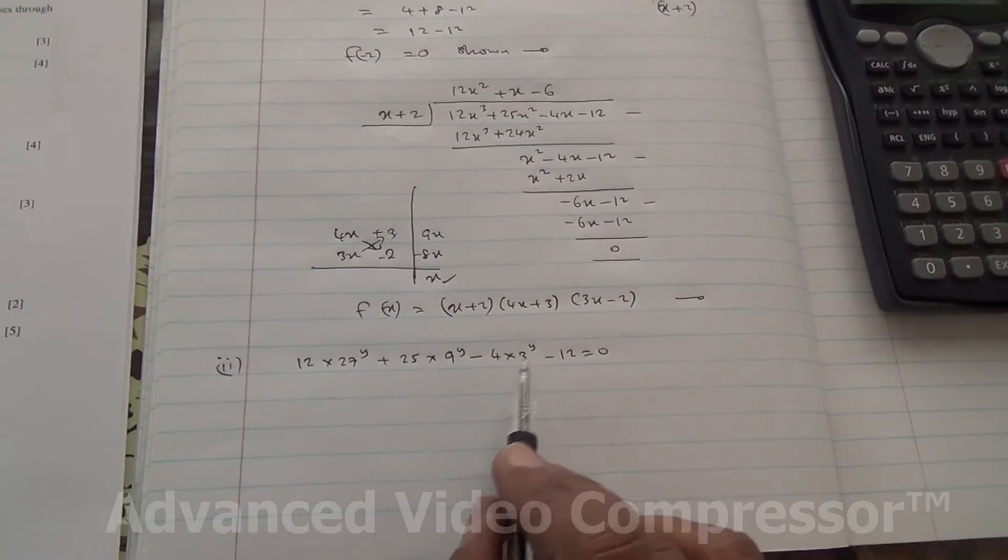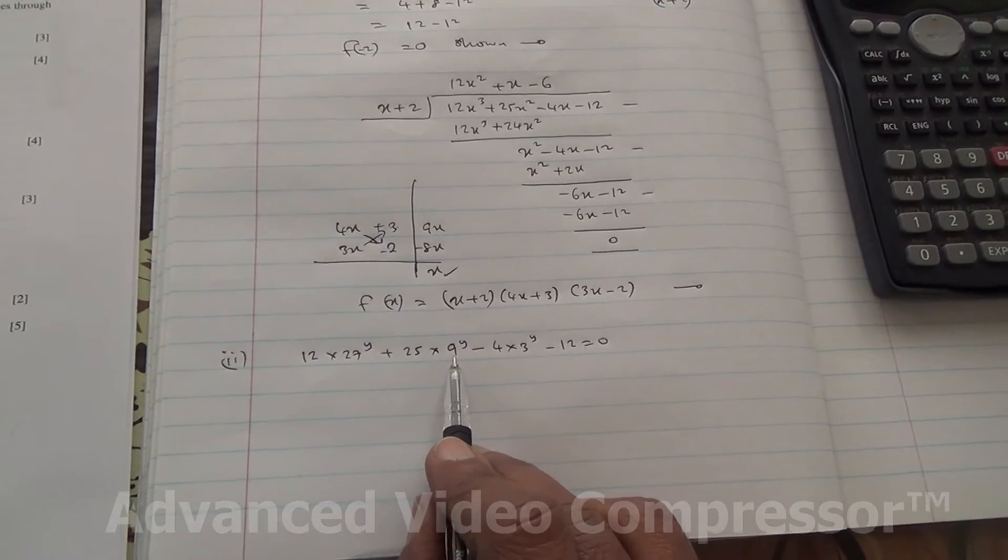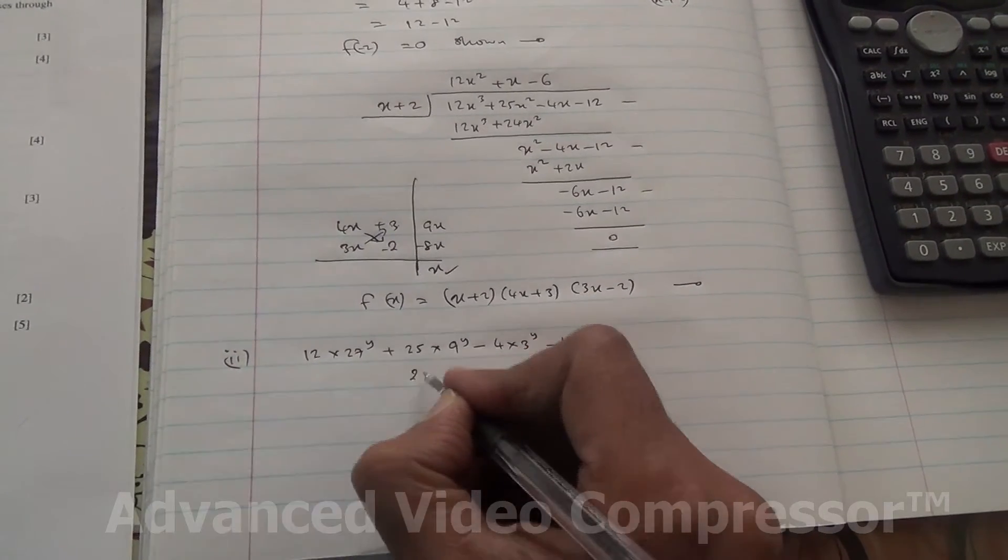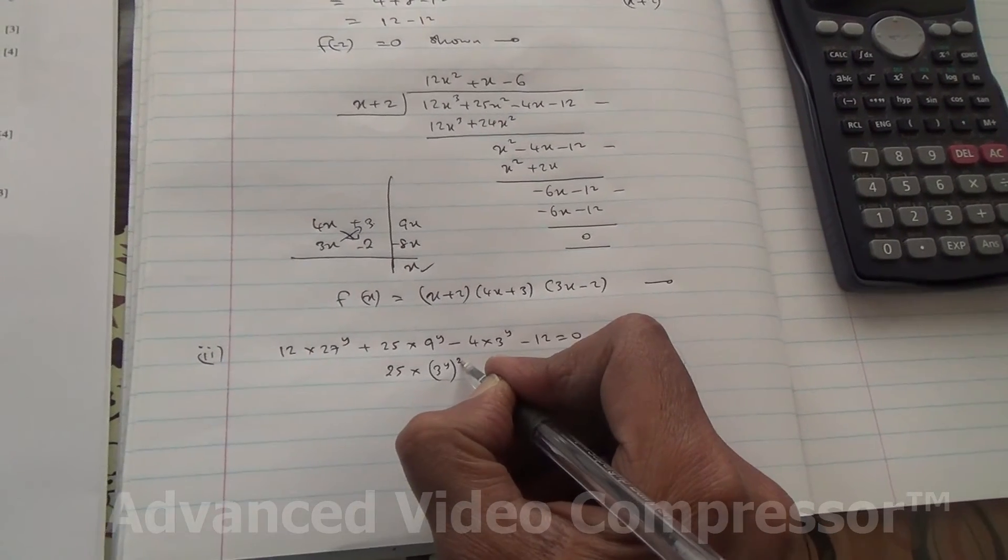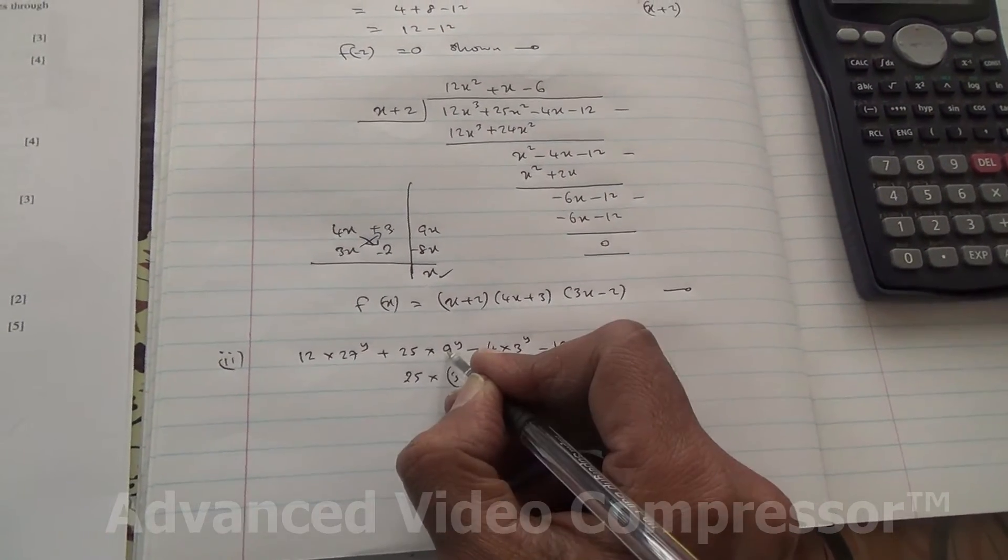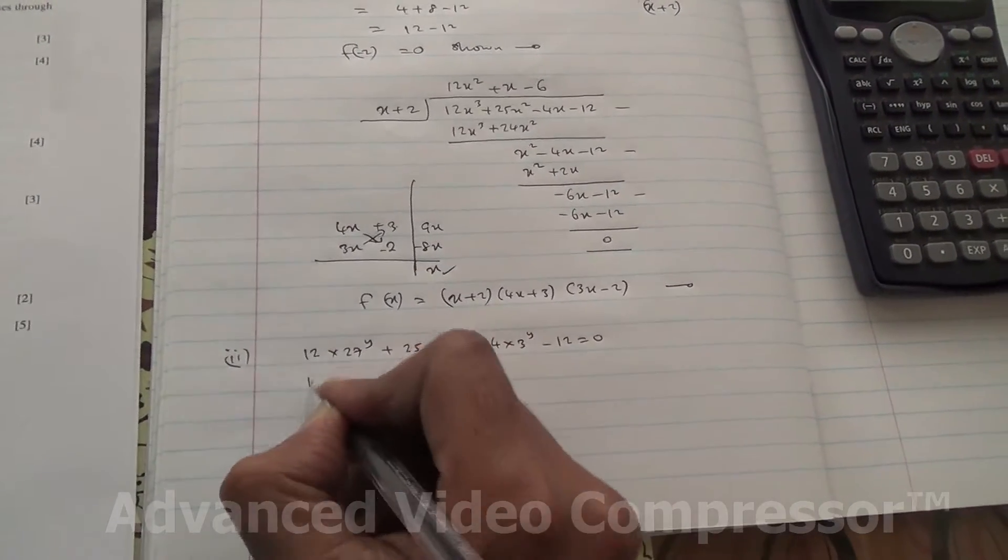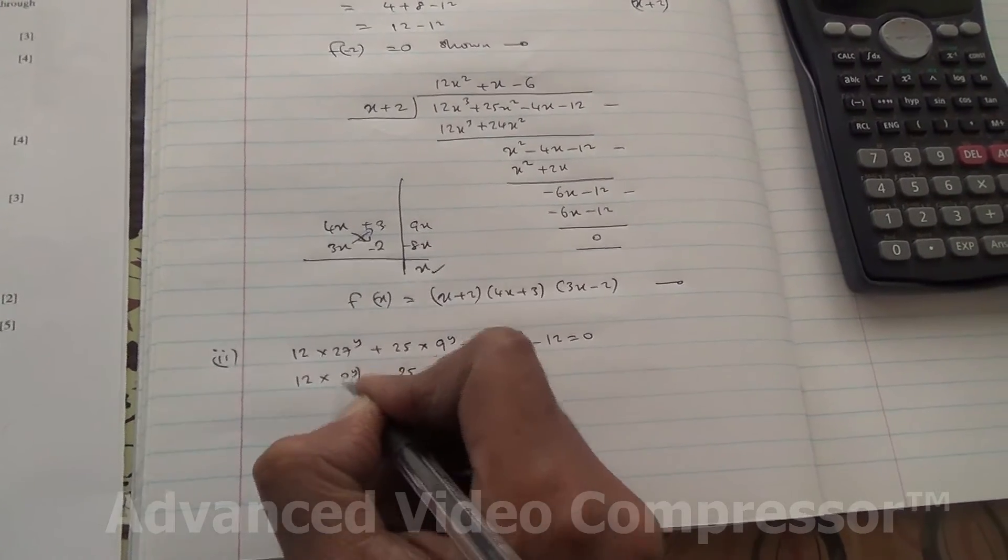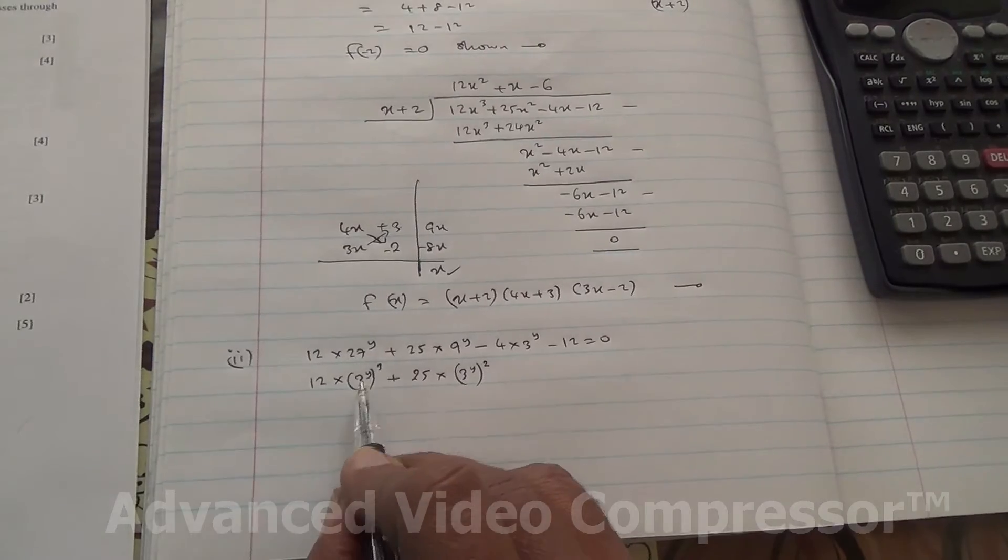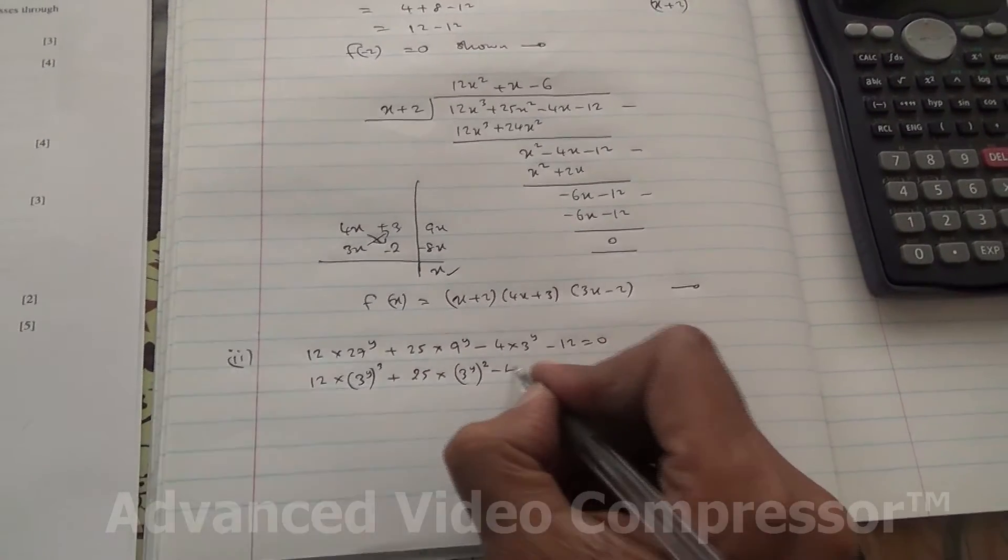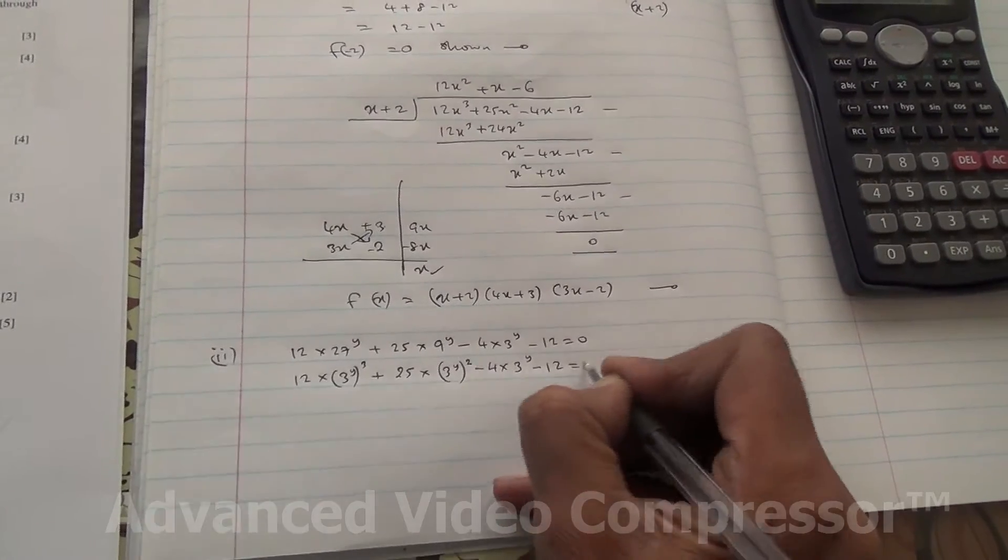Now, from here, we see that this is 3 to the power of y, this also can become 3 to the power of y, so we'll get 25 times 3 to the power of y, except that you can put this square outside, because 3 to the square is 9. And similarly, we can go for this one as well, 12 times 3 to the power of y, but this one to the cube. 3 to the cube is 27, so minus 4 times 3 to the power of y, and then minus 12 is equal to 0.